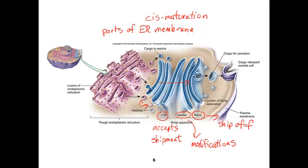So it's a logical sequence of events: we produce products in the ER, then sort, modify, and ship from the Golgi. That is consistent with any product produced by the endomembrane system — it follows this path: ER, vesicles, Golgi. Where we begin to diverge is once we leave the Golgi — where is our product destined? For example, this could be a neurotransmitter or insulin, a protein meant to be secreted from the cell. There are other destinations for that cargo as well.